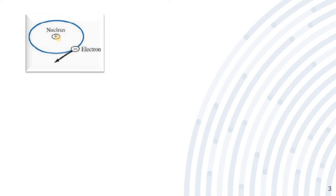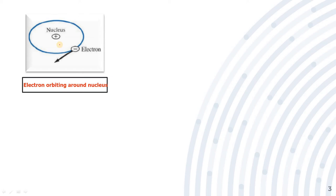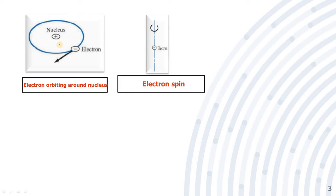We know that a given material is composed of atoms. Each atom may be regarded as consisting of electrons orbiting about a central positive nucleus. The electrons also rotate or spin about their own axis. Thus, an internal magnetic field is produced by electrons orbiting around the nucleus, as shown in the figure. The next figure shows the electron spinning around the nucleus.